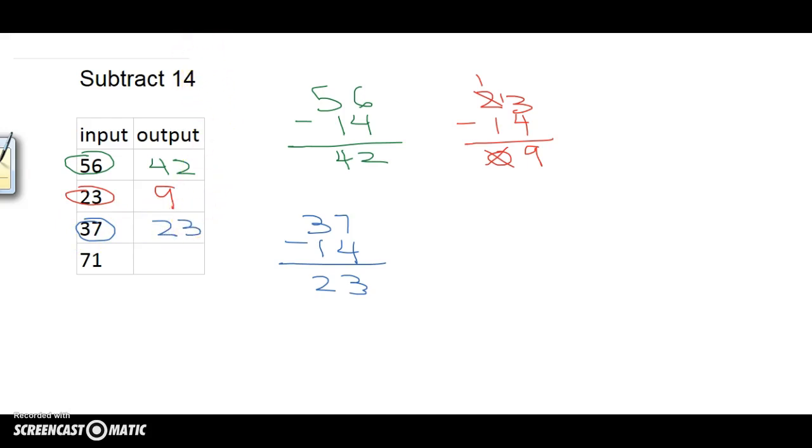All right, last one. This time, let's do 71. Let's do that over here. 71 minus 14. 1 minus 4, I can't do that. So I borrow from the 7. 11 minus 4 is 7, and 6 minus 1 is 5. Therefore, when my input is 71, my output is 57. And I'm done.